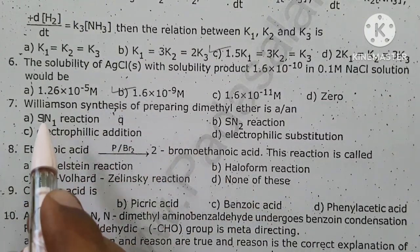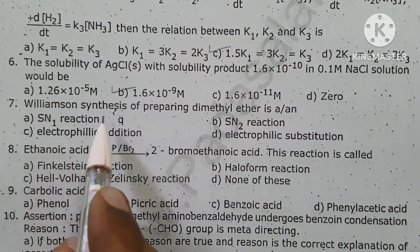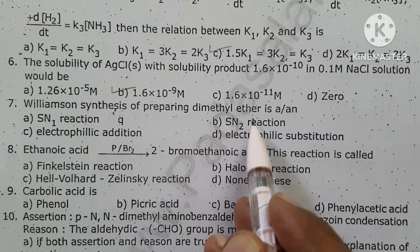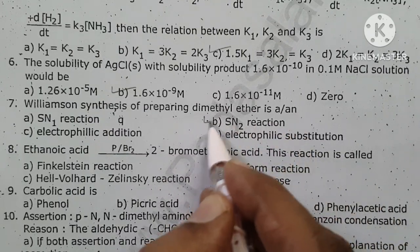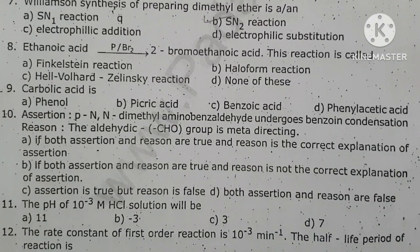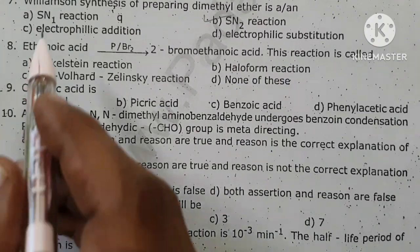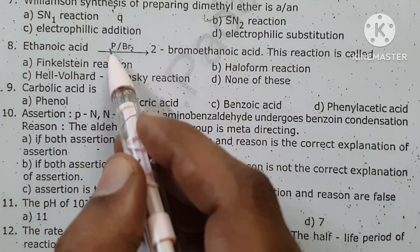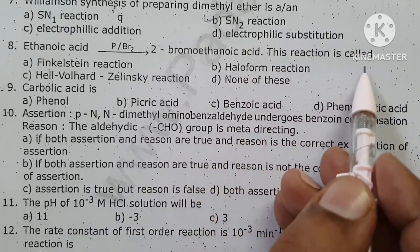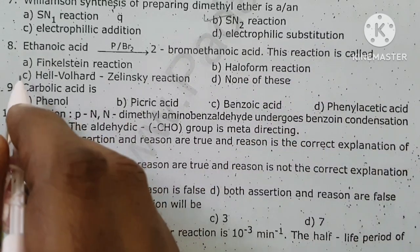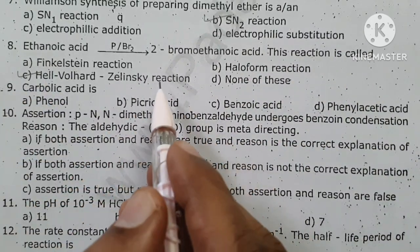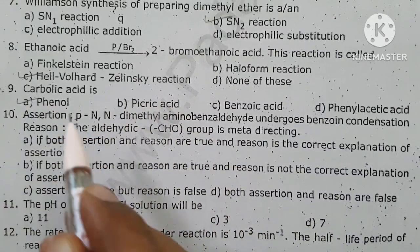Williamson synthesis of preparing diethyl ether or dimethyl ether is an example of an SN2 bimolecular nucleophilic substitution reaction. Ethanoic acid in the presence of PBr2 gives 2-bromoethanoic acid. This reaction is called the Hell-Volhard-Zelinsky (HVZ) reaction. Carbolic acid is phenol.